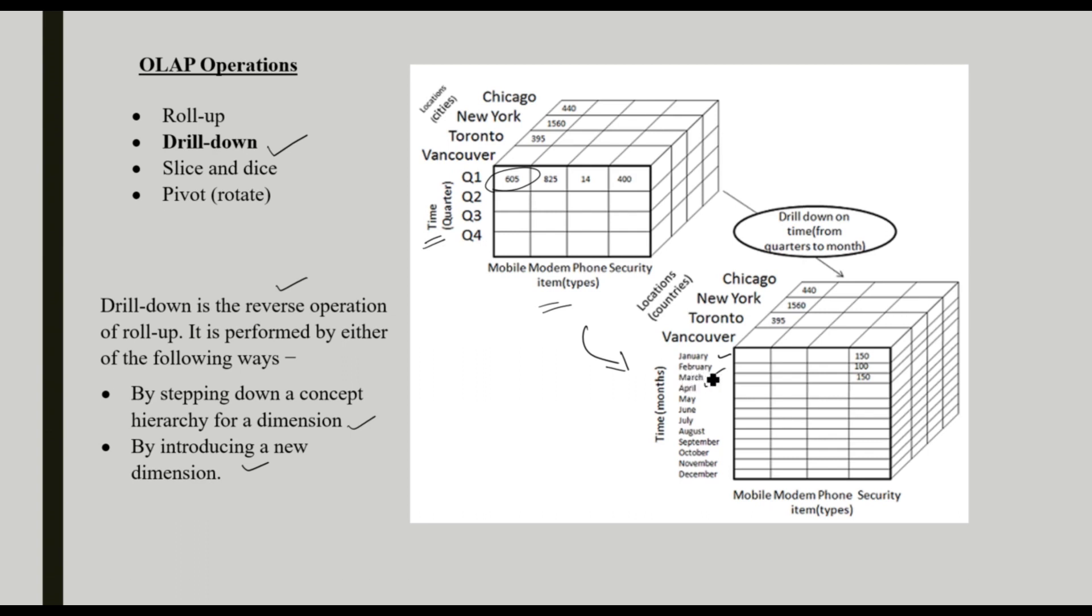We are here listing the sales of every month, like January, February, March. Like that, we are drilling down our sales details. This is the operation called drill-down in OLAP.